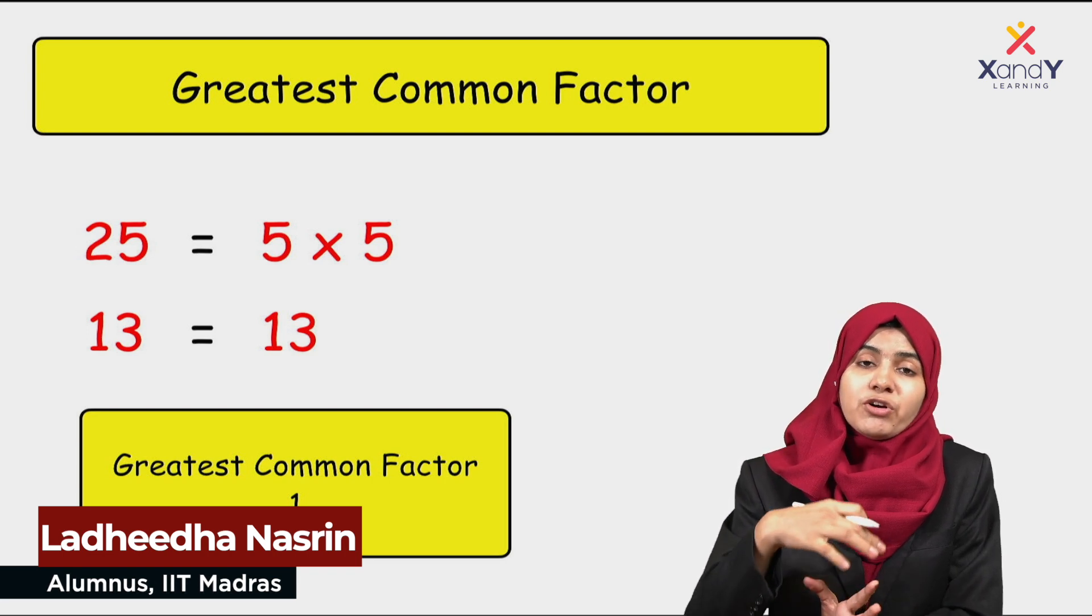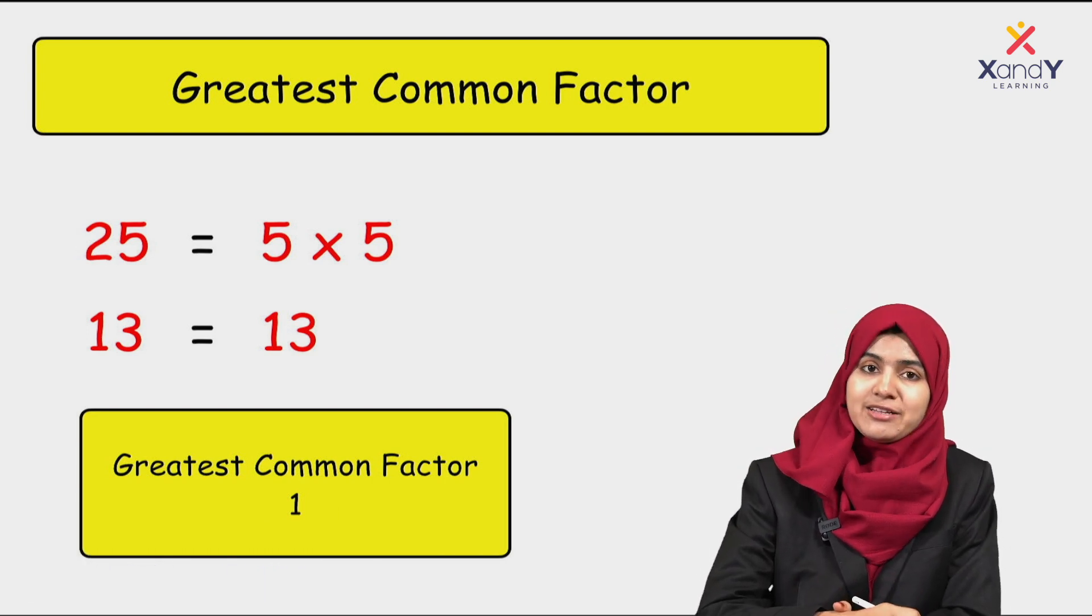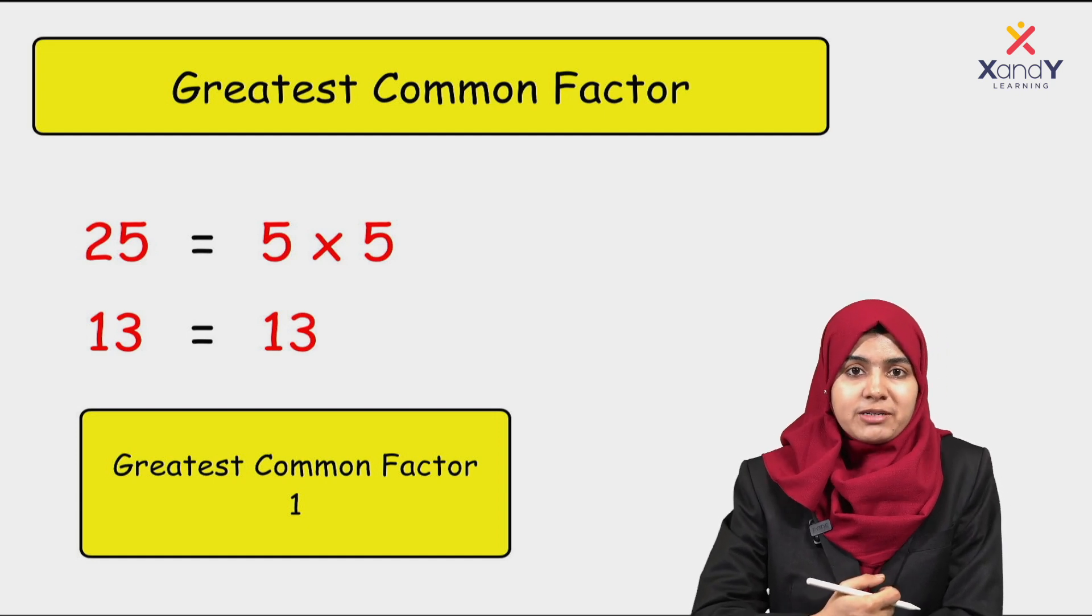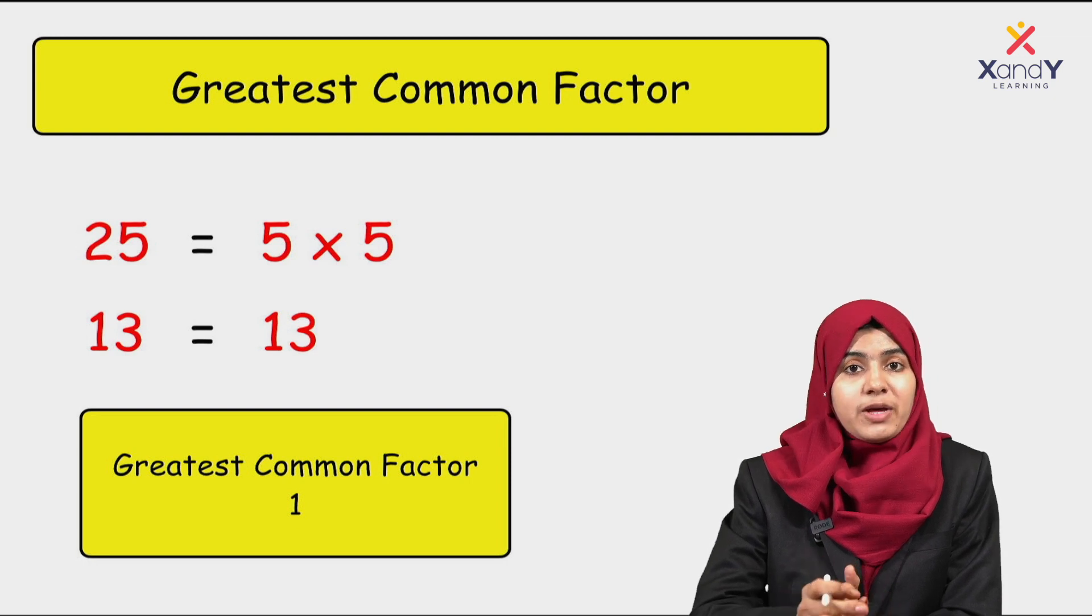Because 1 is the factor of all numbers, right? So in this case, 1 is the greatest common factor.